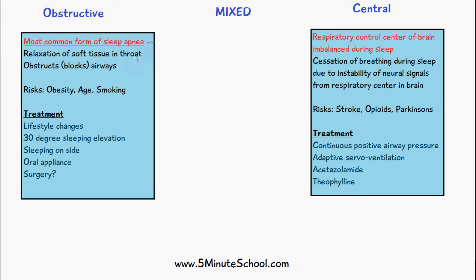The risk factors for obstructive sleep apnea include obesity, increasing age, and smoking. Respiratory infections and chronic respiratory diseases like asthma are also risk factors. Treatments include lifestyle changes like losing weight, stopping smoking, and treating any respiratory infections.